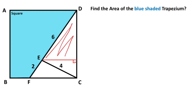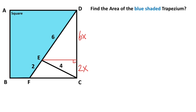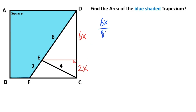If you notice, this triangle and this triangle are similar. Therefore, if there's a 6x opposite the 6, then opposite the 2 must be equal to x. The similarity ratio between these two triangles is 6x over 8x, which simplifies to 3 over 4.